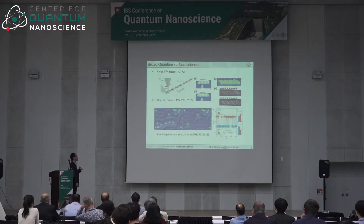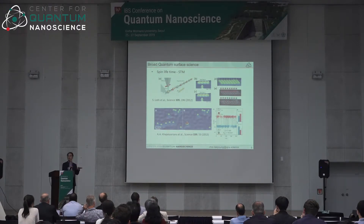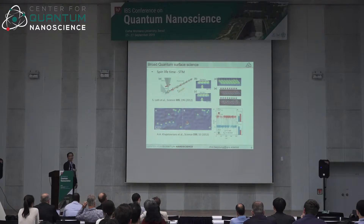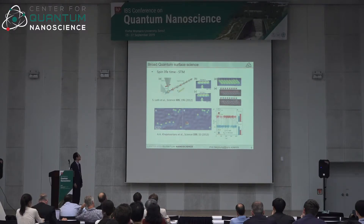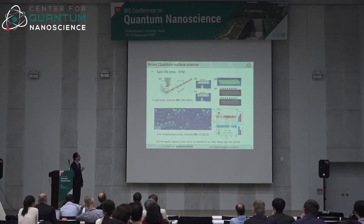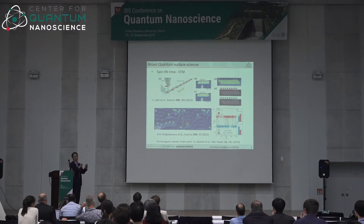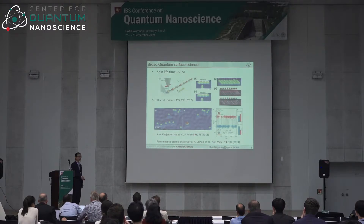Surprisingly, one year later the Wieselanger group manipulated individual iron atoms on a copper(100) surface — a metal surface — and formed five iron atom clusters. Despite lots of conduction electrons, those five iron atoms could still maintain a stable magnet for several seconds at low temperature. The Sanfauthas group, also using copper nitride but in a diagonal direction with ferromagnetic coupling, similarly showed spin states remaining stable for several seconds at very low temperature.